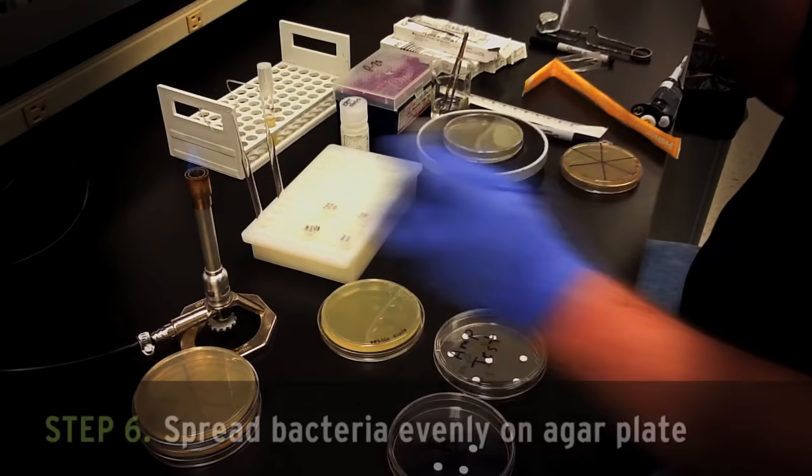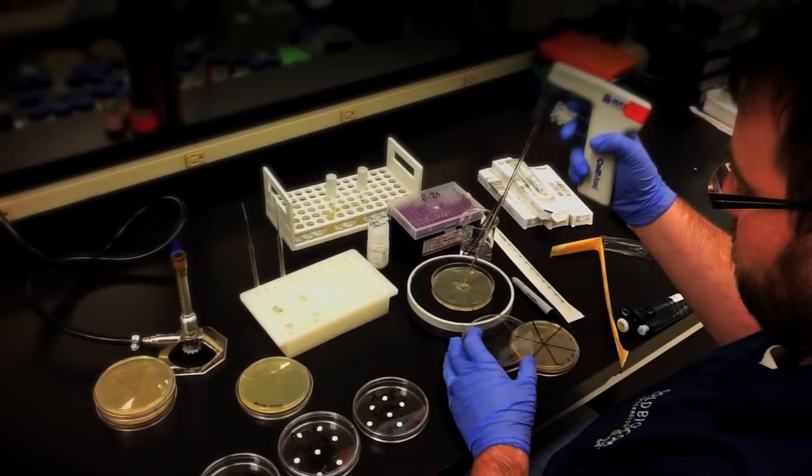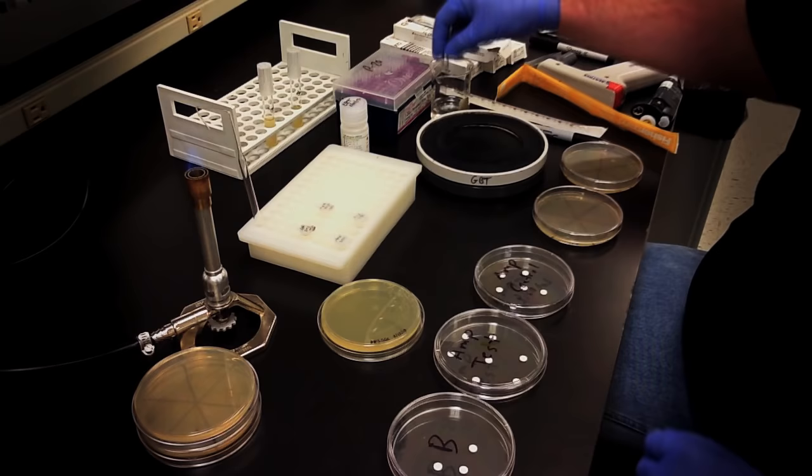Once your cultures have reached the correct density, we're going to plate around 200 microliters onto each plate. Make sure to spread the bacteria evenly so that all areas are covered. Once there's no visible liquid on the plate, you're ready to place your discs.